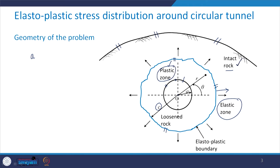In the plastic zone from the cavity wall to the elasto-plastic boundary, you will have the loosened rock. This boundary drawn in blue is the elasto-plastic boundary. As discussed in the elastic analysis, any point in the rock is denoted by r, theta, where r is the radial distance from the centre point O, and theta is the angle measured from the horizontal in the anti-clockwise direction.